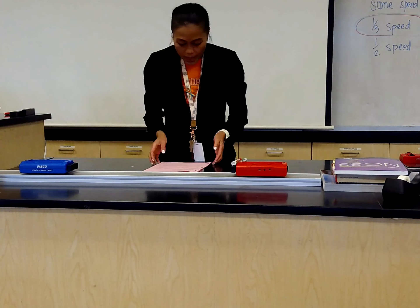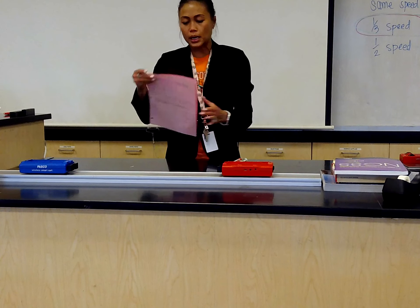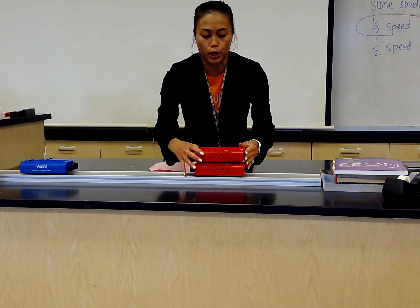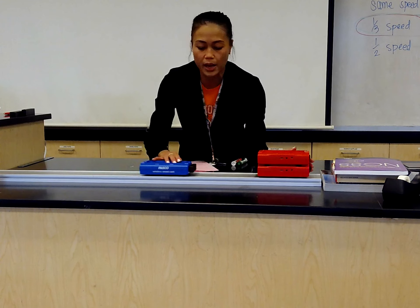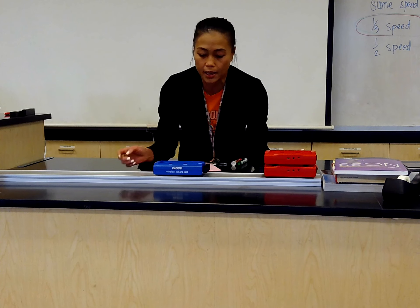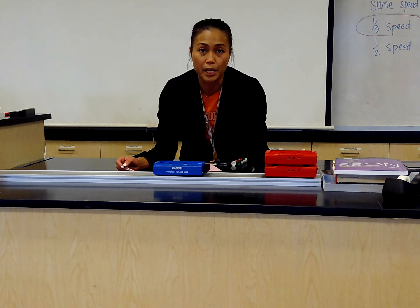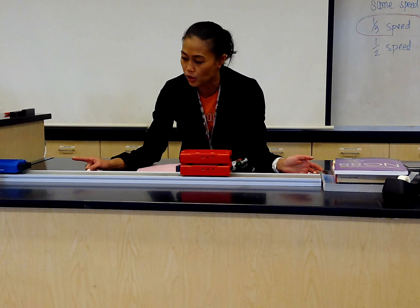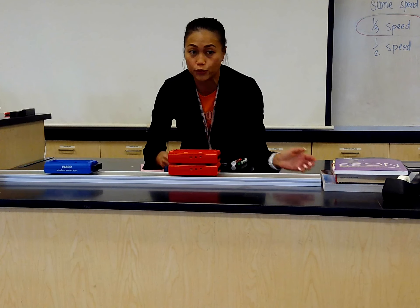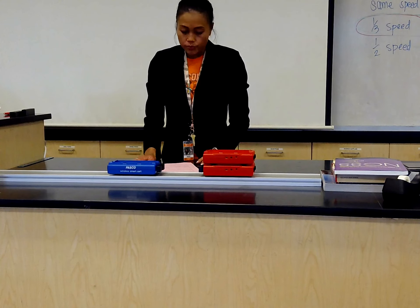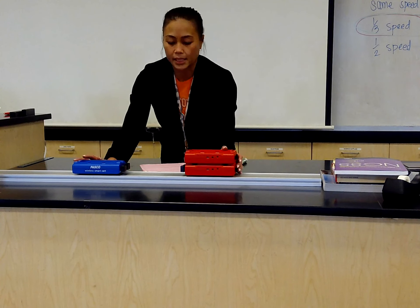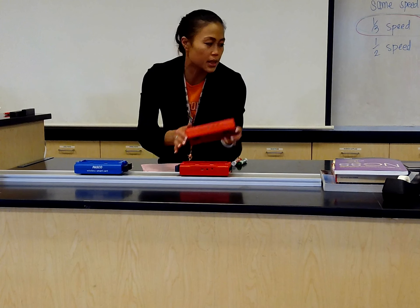Then the last one, collision three, is when my red card has double the mass of my blue card. Now we won't be able to see the actual number values, but you can probably get a pretty good image of what this looks like. I'm going to roll my red card pretty slow. Notice how much faster that blue card is moving forward versus the red card. So that's your collision three with elastic collisions.